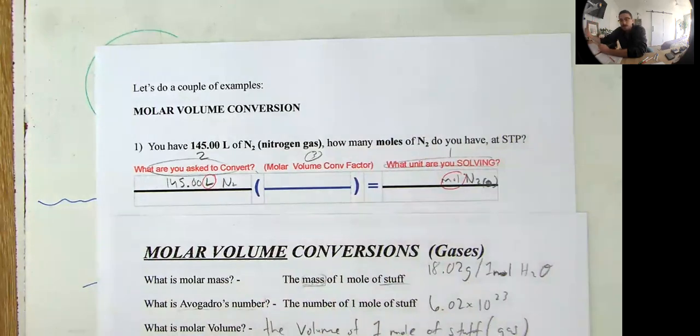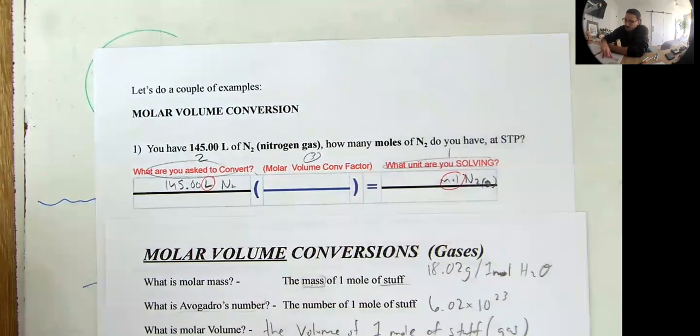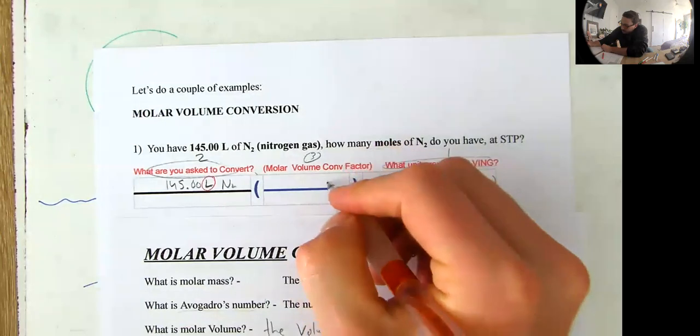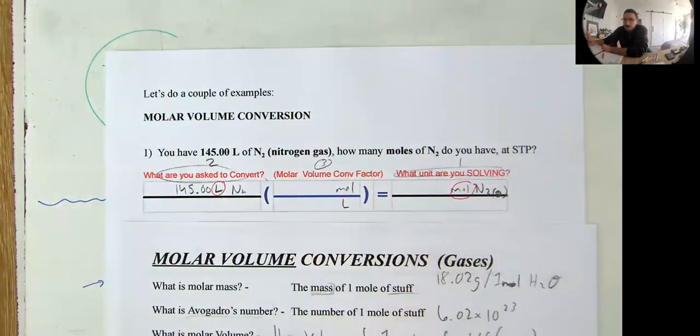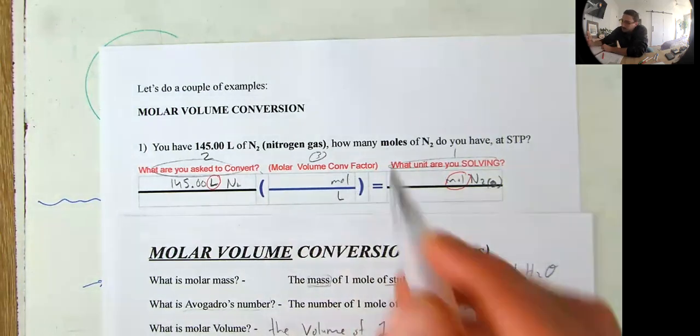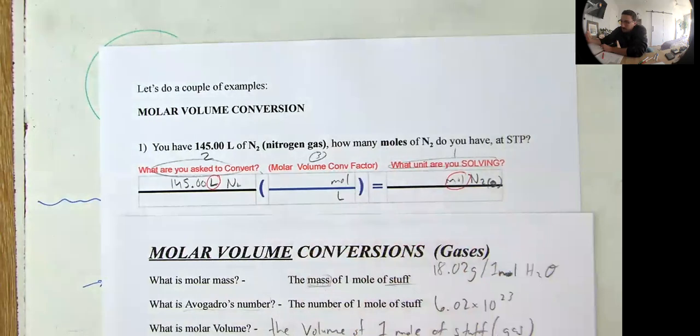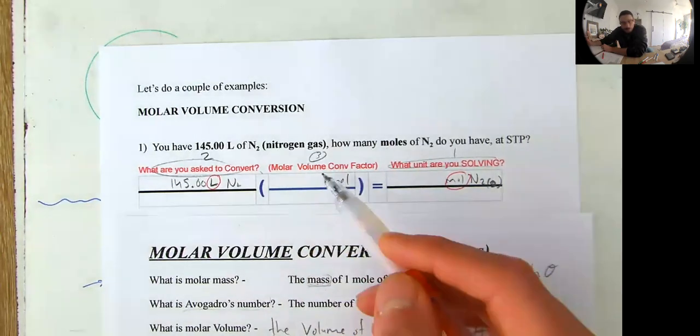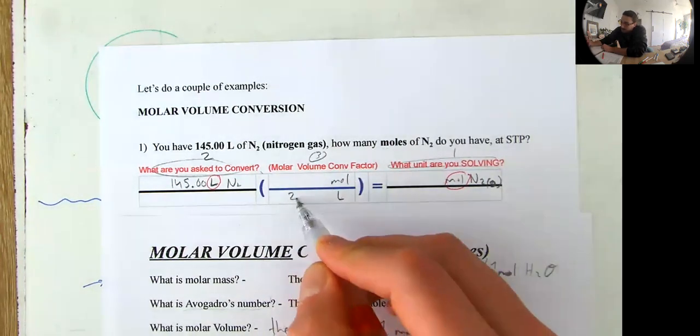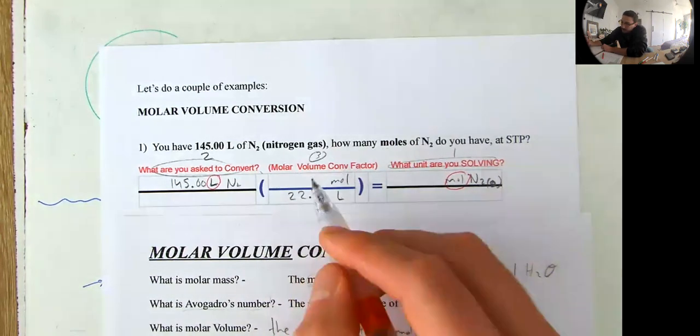Okay. So this is a new conversion factor that you just learned from this video. It's called molar volume. It converts liters into moles. And the conversion factor works exactly the same way. You need to place the unit that you want to convert on the bottom and the unit that you're converting into on the top. Okay. So now we know that we can put the molar volume. So what number am I going to put in here? You can pause the video and put in the correct number if you'd like for your notes.